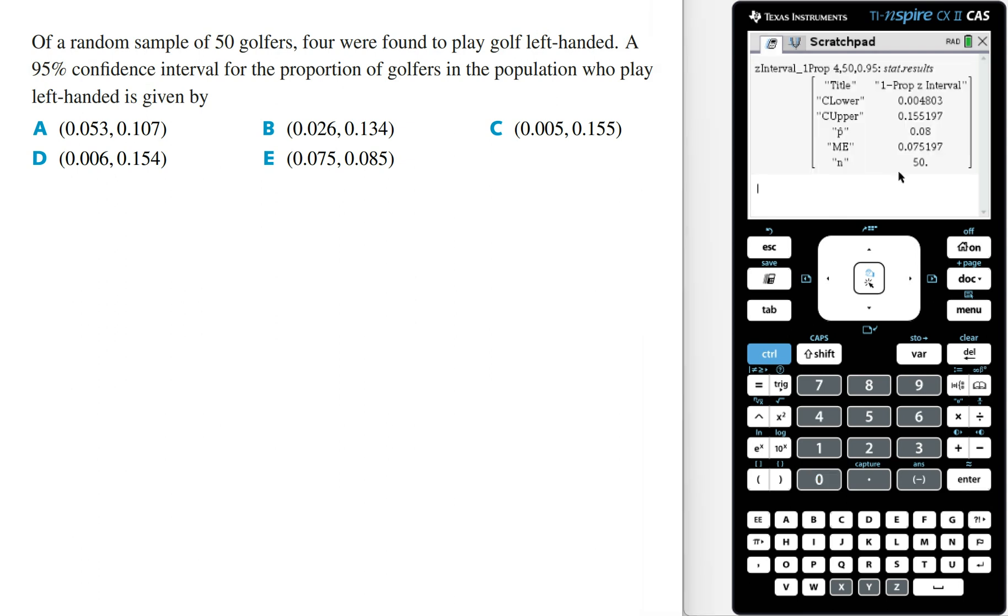The C-lower and C-upper values give us the 95% confidence interval. And so correct to three decimal places, this is going to be 0.005 and 0.155, giving us the answer option C for this question.